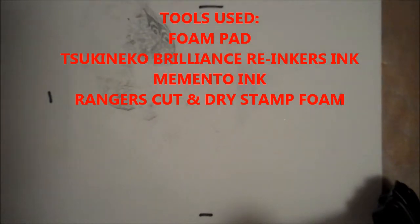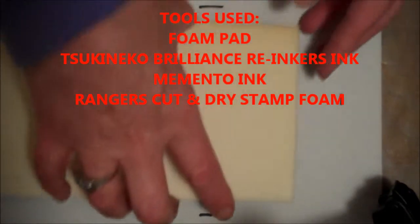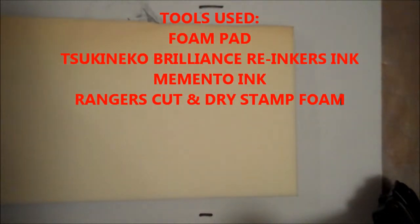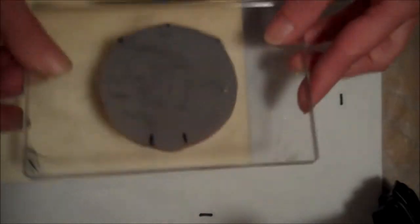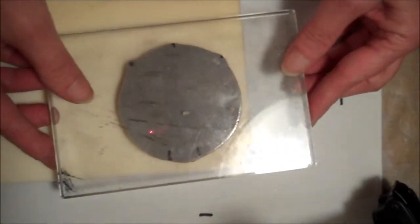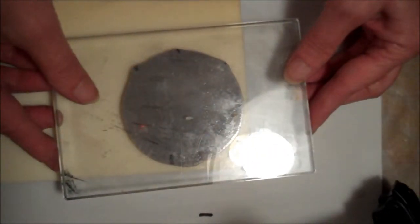So, the first thing we're going to do is we're going to make a stamp pad. We're going to take the cut-and-dry stamp pad foam, and Gwen is going to ink up the peace sign, the Eagle Peace image, with Memento Ink, and she's going to create an image on the pad foam.